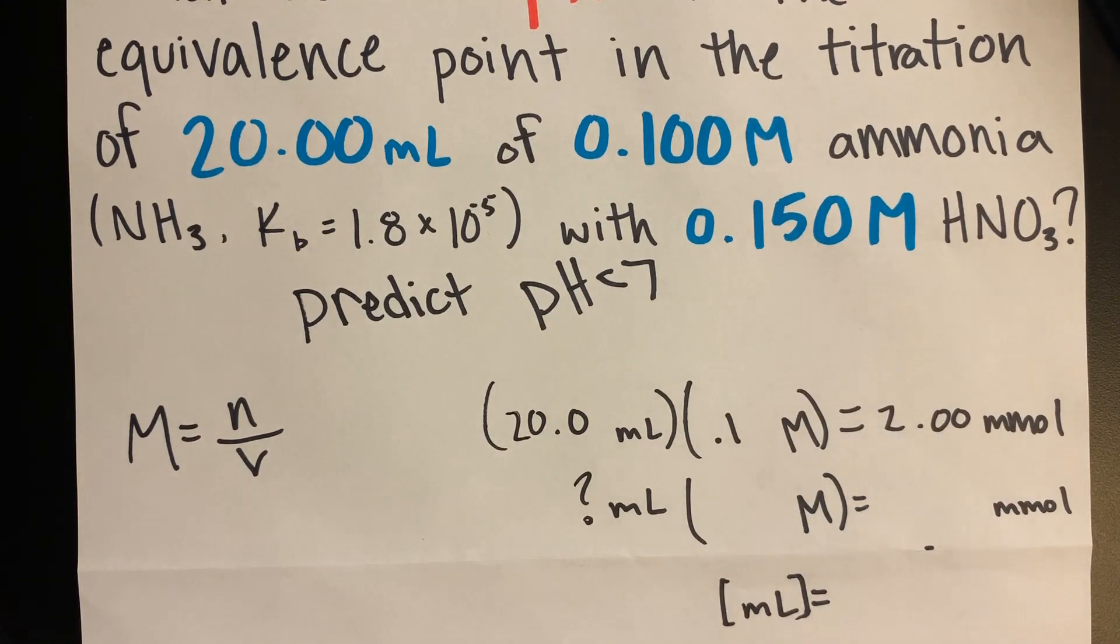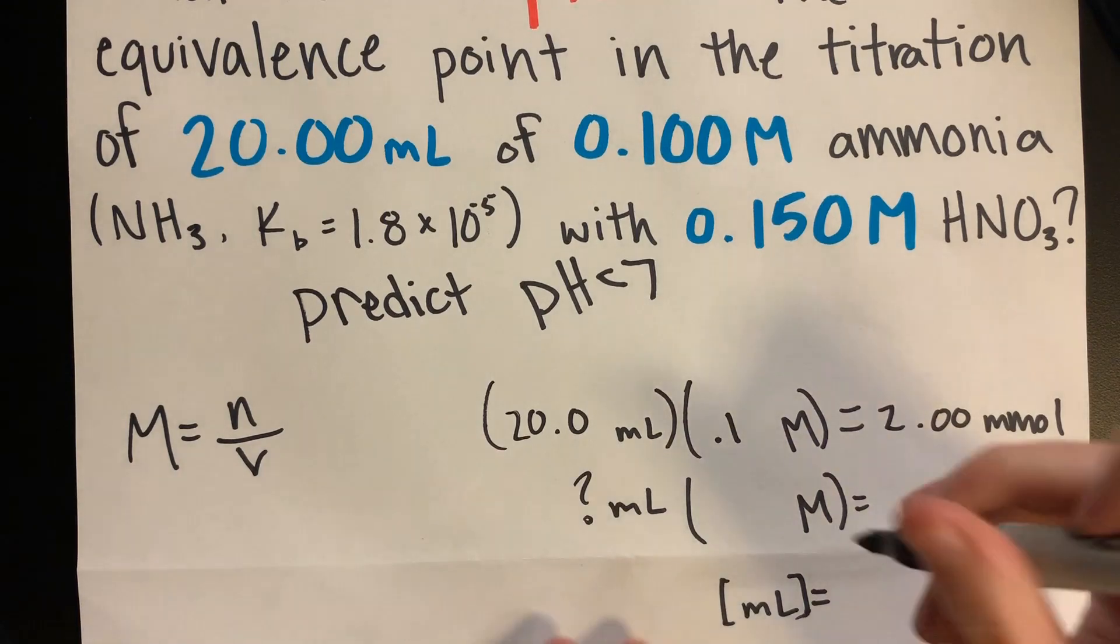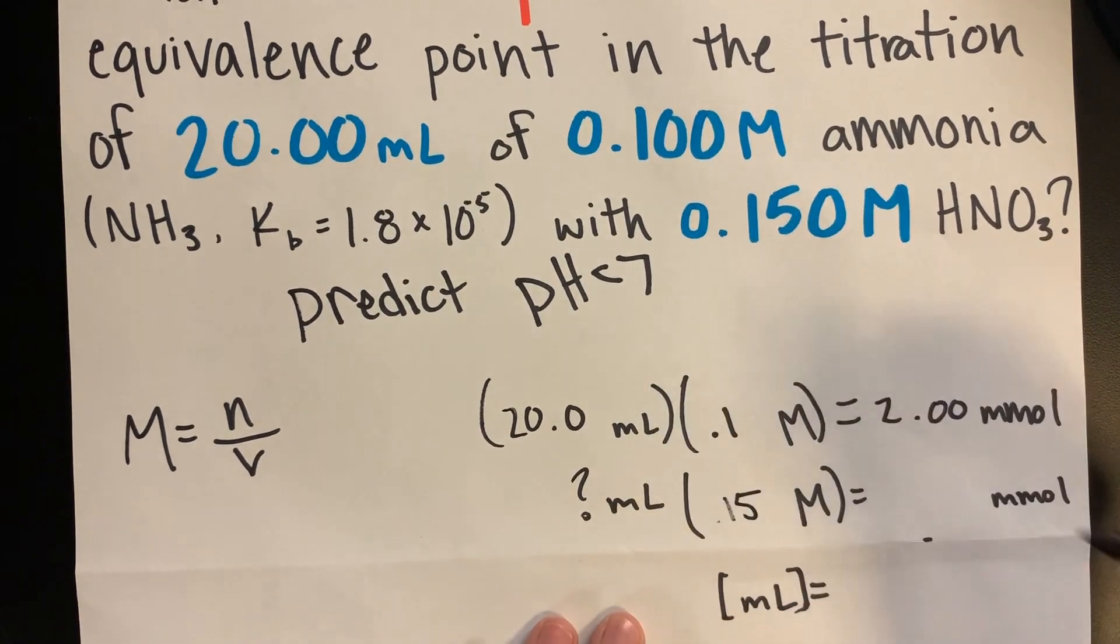Since we need the pH at the equivalence point, we know that the moles of weak base will be equal to the moles of the acid. In order to find the volume of the acid during the titration, we solve for the milliliters by using the formula for molarity. The molarity of the acid given is 0.15 molar.